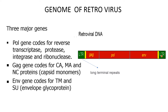followed by the env gene, and again a long terminal repeat at the other end. The pol gene encodes for reverse transcriptase, protease, integrase, and ribonuclease. The gag gene codes for capsid monomers like CA, MA, and NC proteins, whereas the env gene codes for envelope glycoproteins like TM and SU.